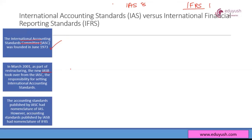The accounting standards published by the IASC — that is, the standards set from 1973 to 2001 — had the nomenclature of IAS with a number. So the prefix of your accounting standard was IAS when it was set by the IASC. When the IASB started to set standards, it started to use the prefix IFRS.